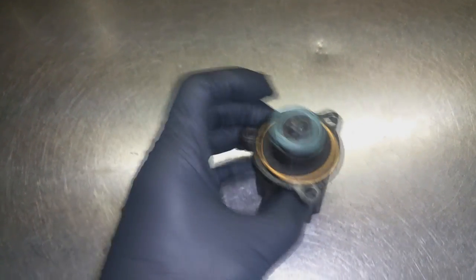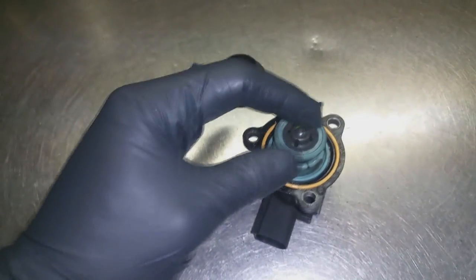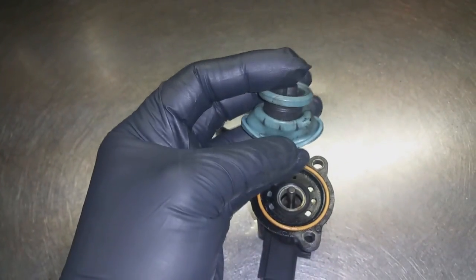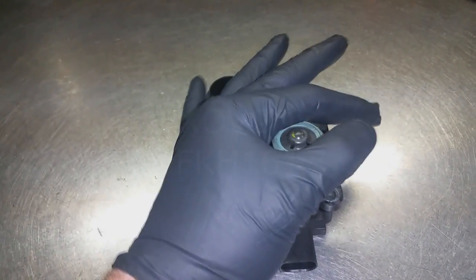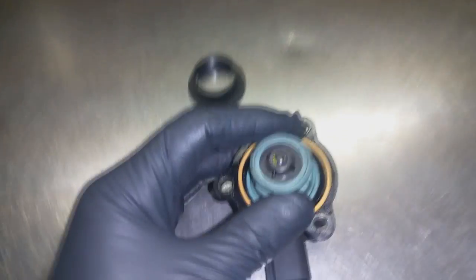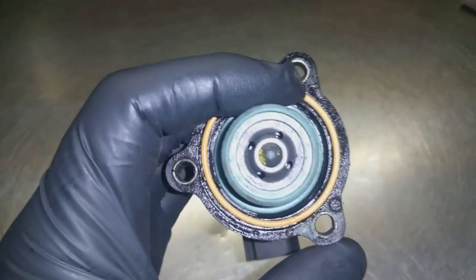So how does the boost still get past? I did mention that the diaphragm tears, but that still doesn't explain how it gets back into the turbo if this is sealed. Well, if you look closely, there are tiny holes in here.